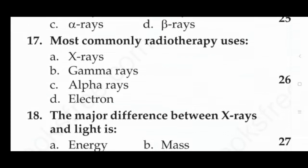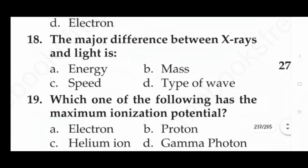Next: most commonly radiotherapy uses — option A: X-rays, option B: gamma rays, option C: alpha rays, option D: electrons. Answer is option A, X-rays. Next question: the major difference between X-ray and light is — option A: energy, option B: mass, option C: speed, option D: type of wave. The answer is option A, that is energy.